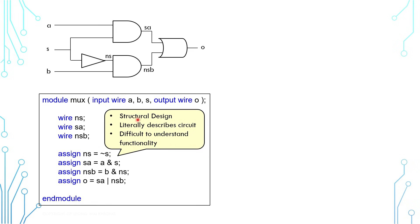This coding style is called Structural Design. It is literally describing the circuit, gate to gate, connection to connection. The downside of this code is that it is difficult to understand what the design intention is.